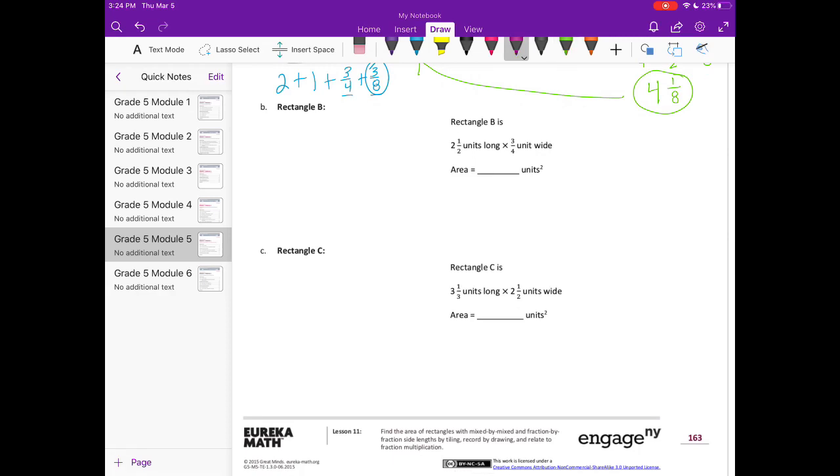Rectangle B is 2 and 1 half units long by 3 fourths wide. I'll multiply 3 fourths times 2 to get 6 fourths or 1 and 1 half. Then 3 fourths times 1 half equals 3 eighths. Adding them: 1 and 1 half plus 3 eighths equals 1 and 4 eighths plus 3 eighths, which is 1 and 7 eighths units squared.